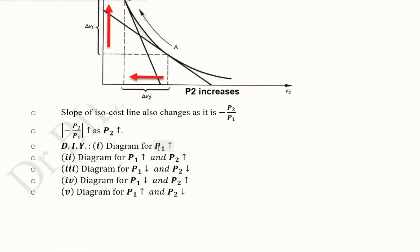For example, you can increase the price of the first input, P1, you can increase the price of both inputs, you can decrease the prices of both inputs, you can decrease the first input price and increase the second input price and vice versa. That is increasing the price of the first input and decreasing the price of the second input.